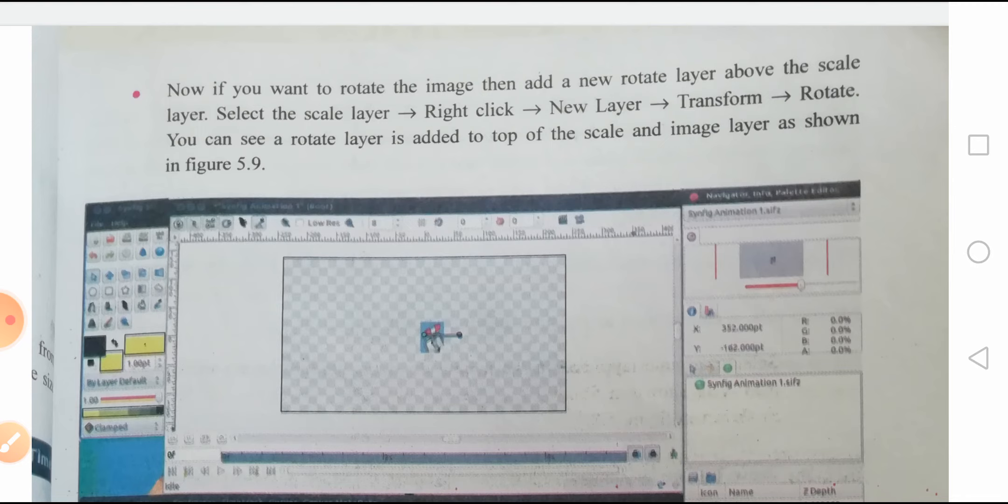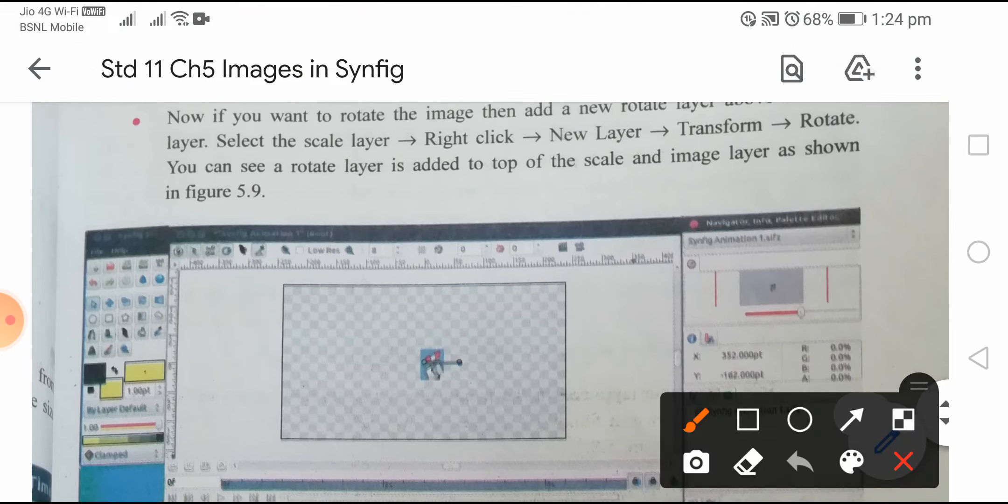If you want to rotate the image, then add a new rotate layer above the scale layer. Select the scale layer, right click, New Layer, Transform, and Rotate. This is the path to add rotation.